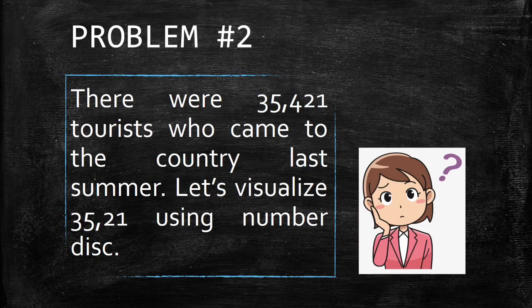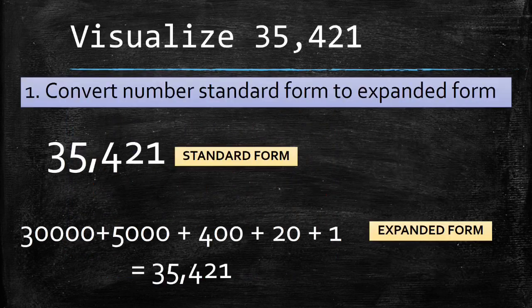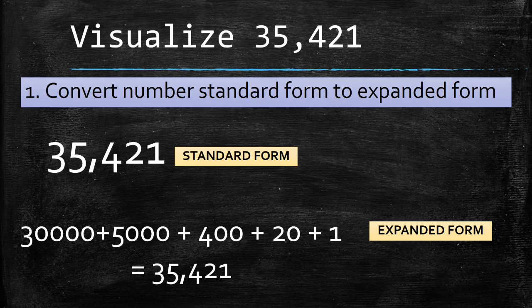Problem number 2. There were 35,421 tourists who came to the country last summer. Let's visualize 35,421 using number discs. Again, we're going to convert the number from standard form to expanded form. Same as on problem number 1.